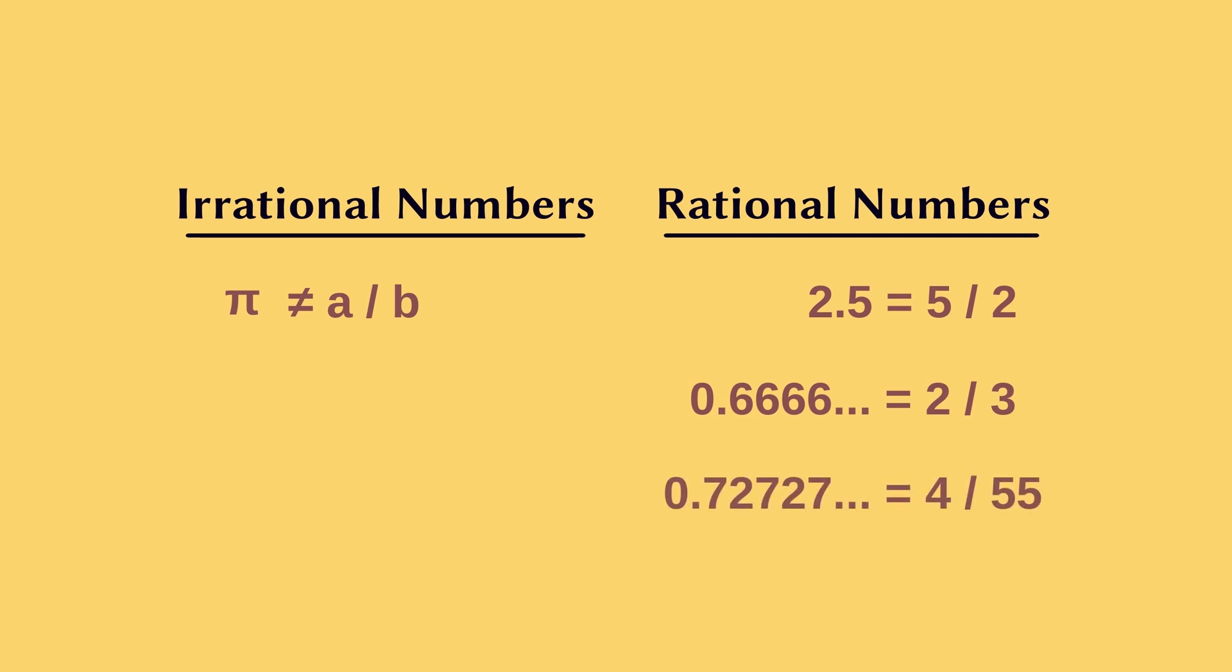Now some examples of irrational numbers are π, e, √2, etc.